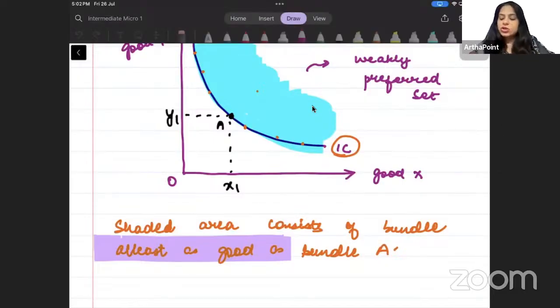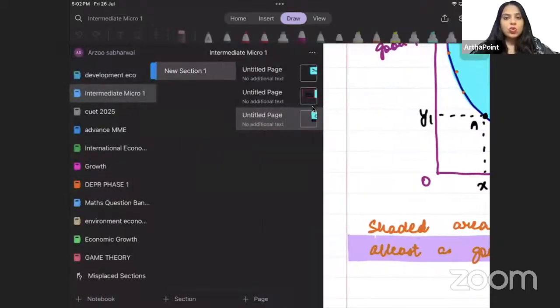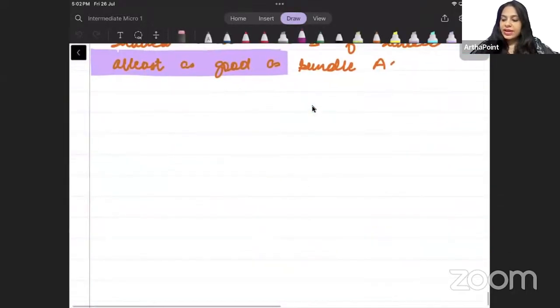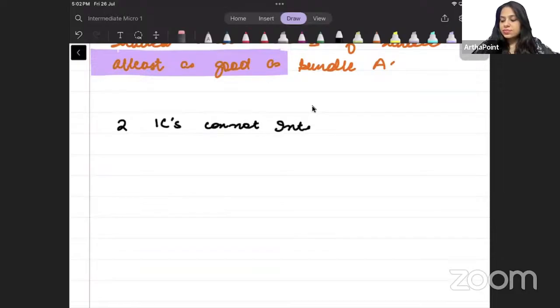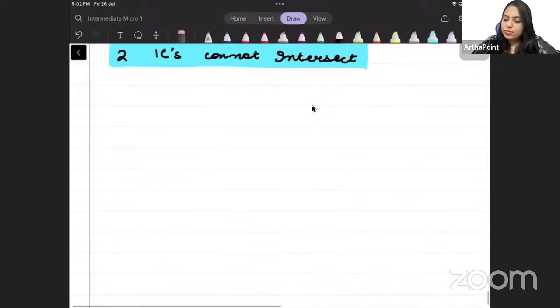Hi, good evening everyone. Today we are going to do an important proof from the point of view of exams, and that is that two indifference curves cannot intersect. The aim of this lecture is to prove that two ICs cannot intersect. Let us try to prove this thing.